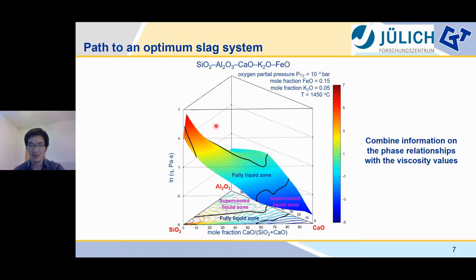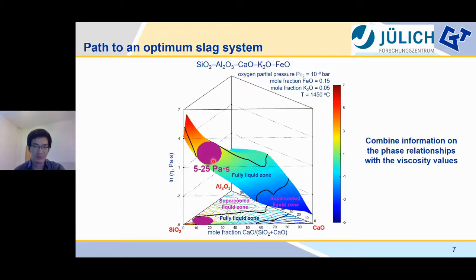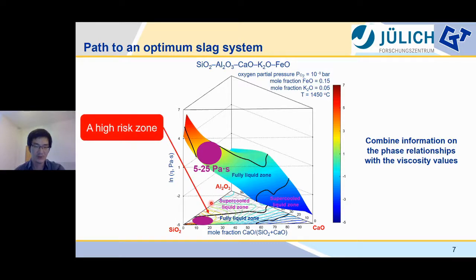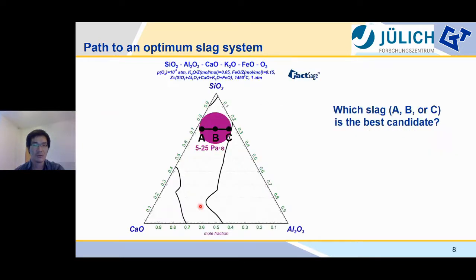Here we combine the viscosity data with the liquidus temperatures. In this figure, this three-dimensional surface corresponds to the viscosity, and these black curves are referring to the liquidus temperatures. We can easily find our targeted viscosity range, indicated by this purple circle. You may notice this purple circle is located within the fully liquid zone, because in the region below the liquidus temperature, the viscosity could be sharply increased by crystals due to crystallization. That's why I define this region as high risk. So we try to find our optimum slag system within this purple circle.